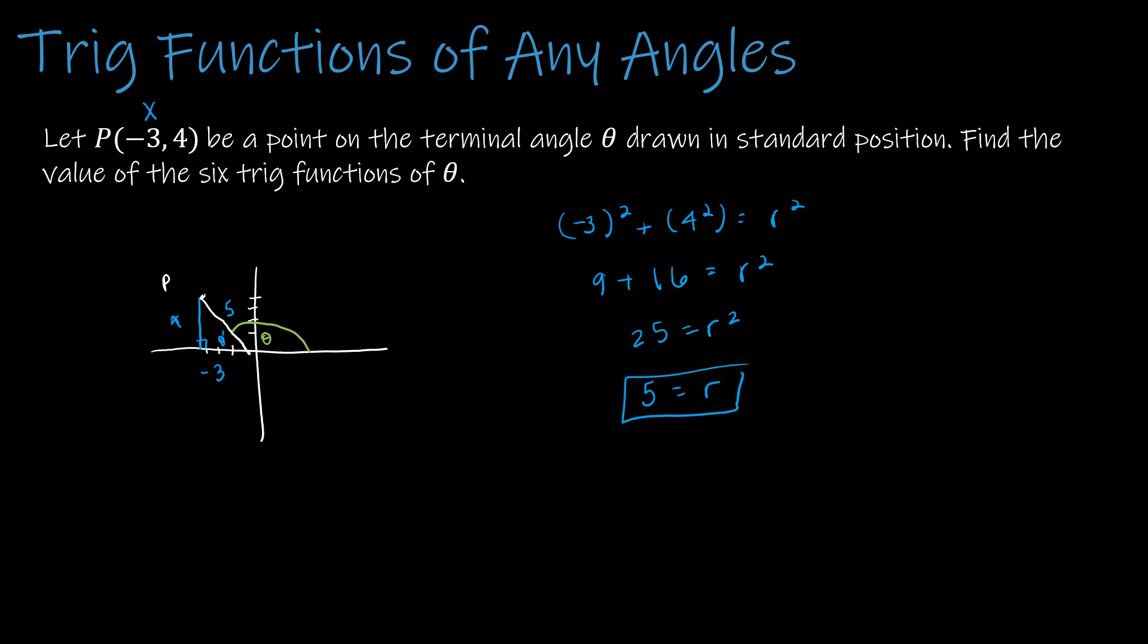So that's our value of 5. Now if I want to find sine of theta, remember it's really sine of theta prime, so I'm looking at opposite over hypotenuse. Then cosine would be adjacent over hypotenuse, and tangent would be opposite over adjacent.